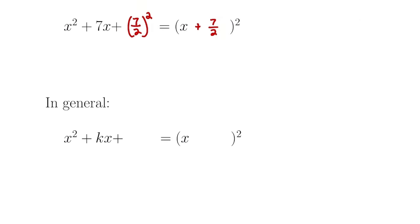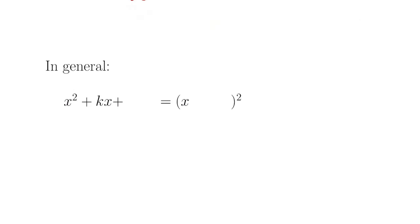In general, when we have x squared plus kx, we need to take half of k — so we get k over 2 — and square it. Then this will factor to be x plus k over 2 quantity squared.